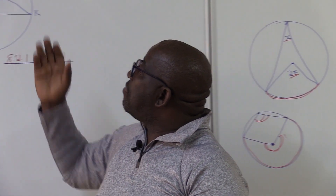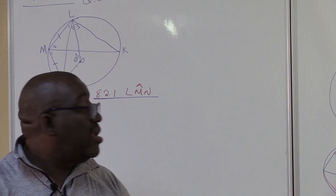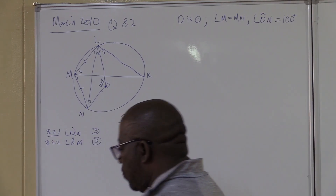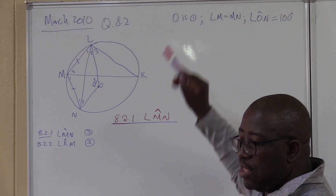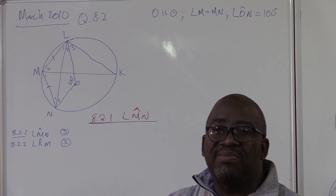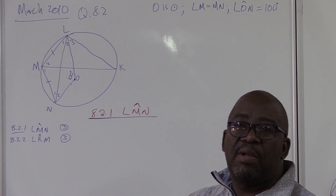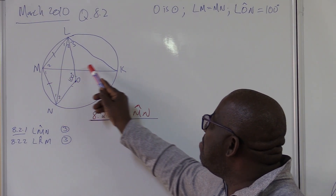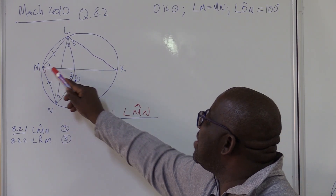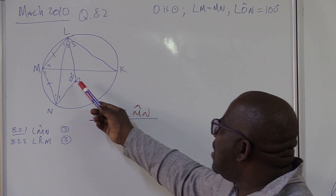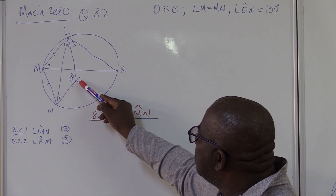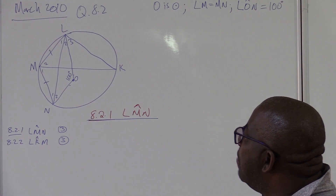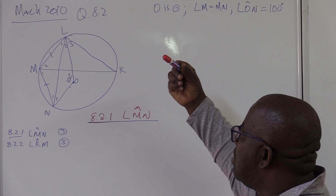Now let us look at the problem taken from the supplementary exams of March 2010, question 8.2. We're given that O is the center. Once they say O is the center, I think of the theorems that have something to do with the center, like the center theorem. Check whether we would have a diameter — in this particular case, this is not a diameter because the center is here and this line does not pass through the center. This is a radius and this is a radius, so this angle will be equal to that one.